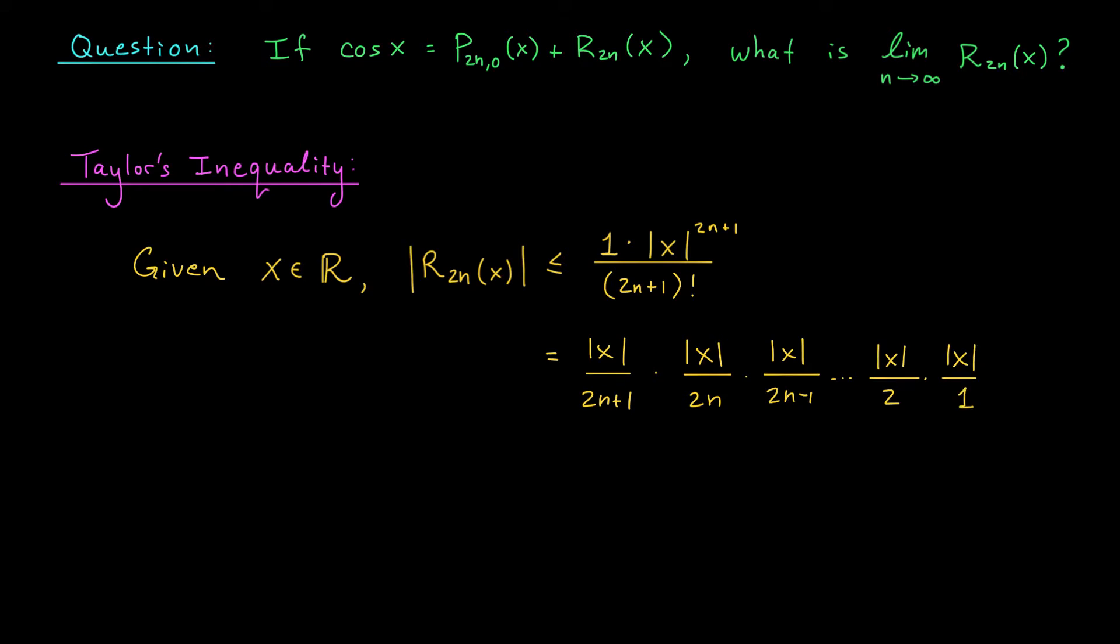Now notice x here is a fixed number. It could be whatever you want, but it's fixed. Maybe x is, I don't know, 300. Well, as n goes off to infinity, eventually these large terms, 2n+1, 2n, and so on, eventually they're going to be much, much bigger than 300. They're going to be a lot larger than x. What that means is that these first terms you see in the product, where the denominators are largest, are eventually going to be very close to 0. And if we multiply by something very close to 0, this entire product is going to be very close to 0.